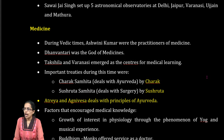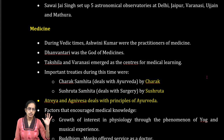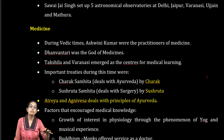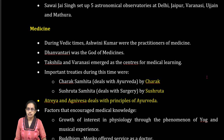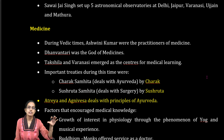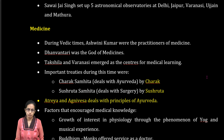Various astronomical centers were also developed by Sawai Jai Singh, known as Jantar Mantar, located in Delhi, Jaipur, Varanasi, Ujjain, and Mathura.